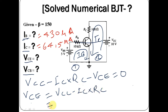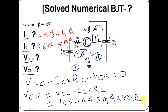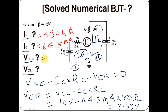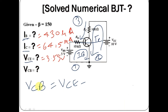Since VCC equals 10 volts, IC equals 64.5 milliampere, and RC equals 100 ohms, you can easily find the value of VCE, which is 3.55 volts.